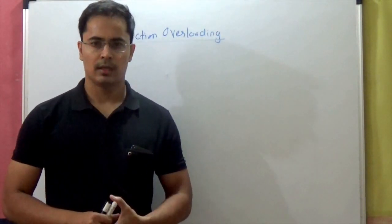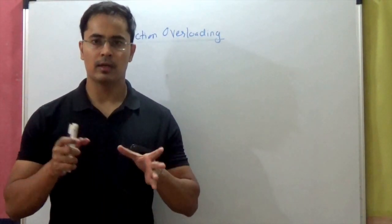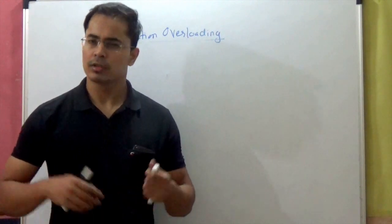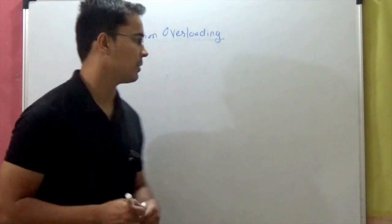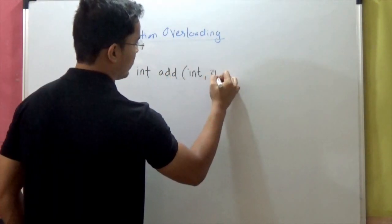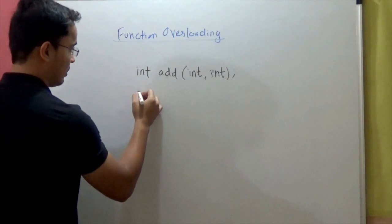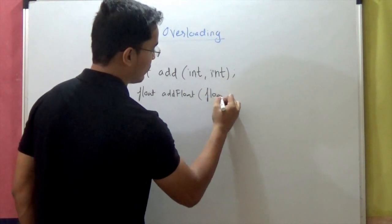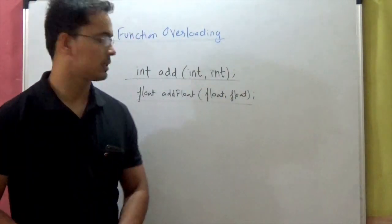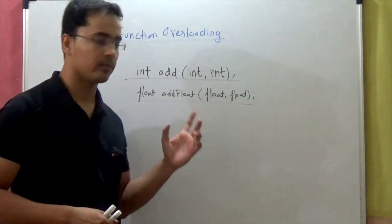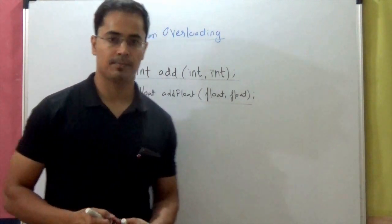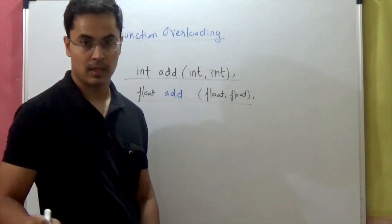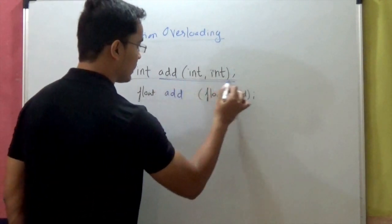What is function overloading? Most of the times it is a good idea to use different names for different functions. But sometimes a set of functions are conceptually performing the same operation. For example, we write this function integer add(int, int) — a function to add two numbers. And float add(float) — a function to add two float values. Although in C language two functions must have two different names, in C++ you can use the same function name for any number of functions as long as your function signature is different.